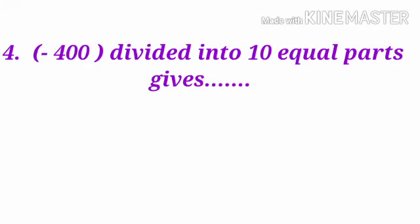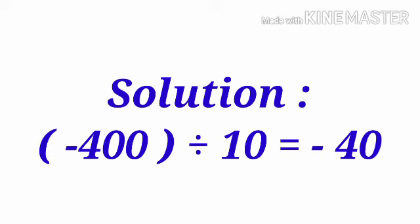Minus 400 divided into 10 equal parts: here we simply divide minus 400 by 10. Since division of two integers of different sign gives a negative integer, minus 400 divided by 10 gives minus 40.